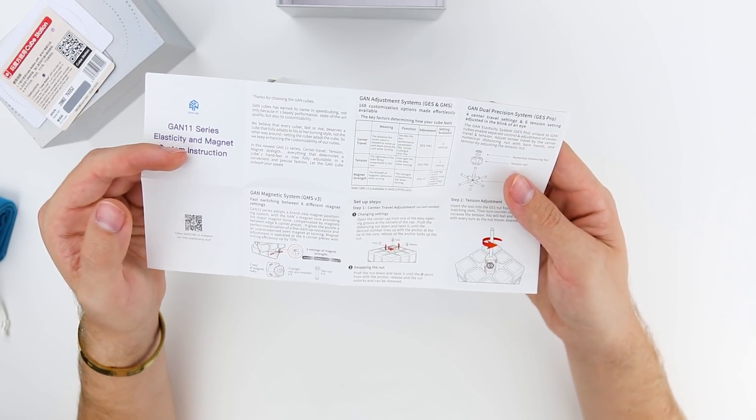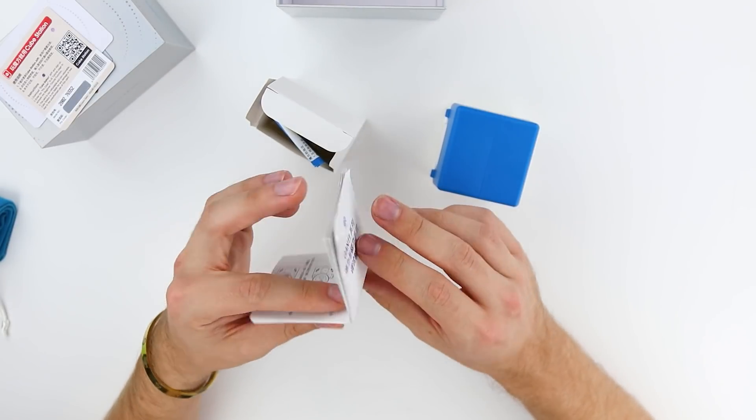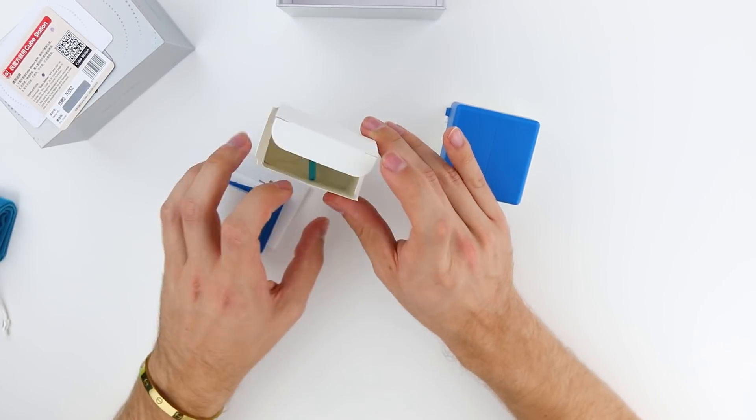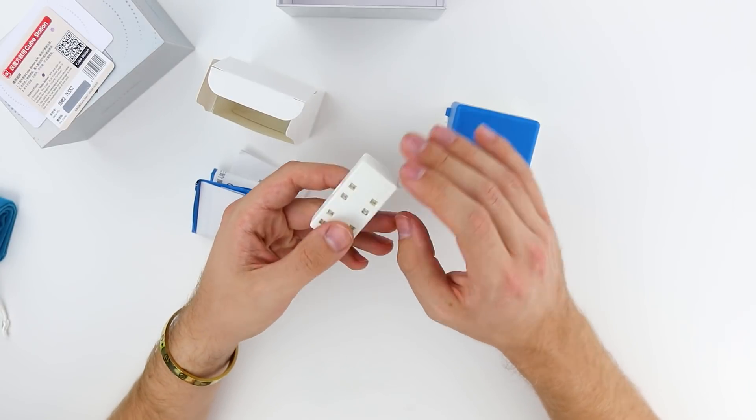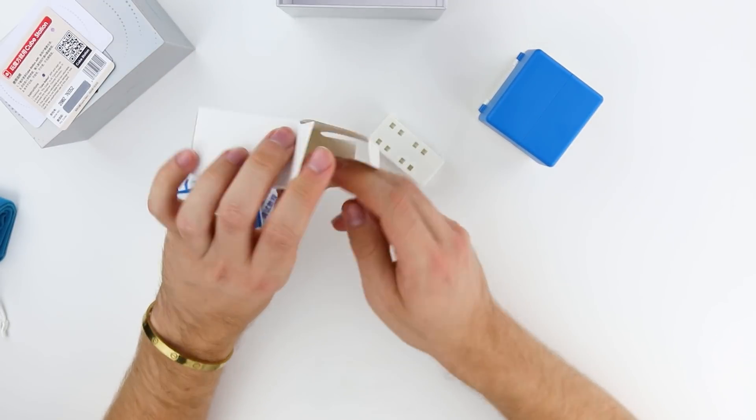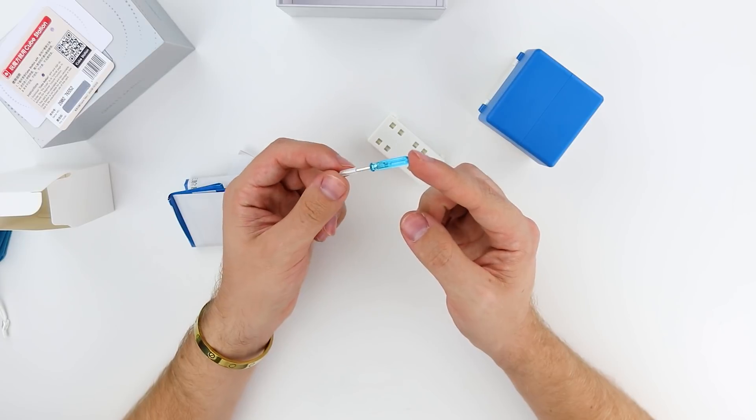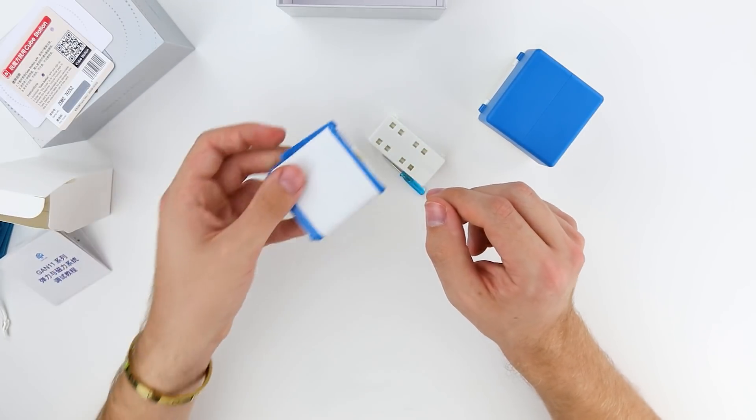So it talks about the corner magnets and the edge magnets as well as the core. And the 11 M-Pro does feature the same core adjustment system as the XS. So you have the distance travel nuts and then the numerical nut, which is a pretty solid system. We have a small accessory box in here and the world's smallest flathead screwdriver. And we have the seat pop guide.